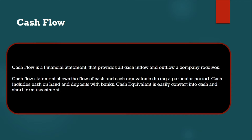Cash flow refers to the flow of cash and cash equivalents during a particular period. Cash includes cash on hand and deposits with the bank. Cash equivalents are things you can easily convert to cash, like short-term investments. For example, money held in a bank can be easily withdrawn, and that is considered a cash equivalent.